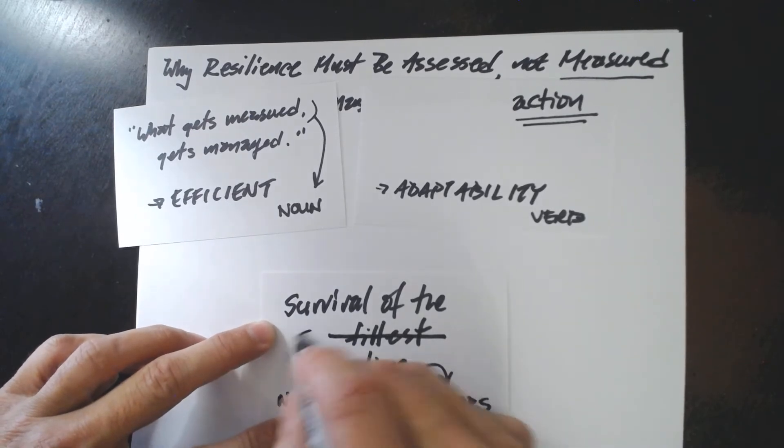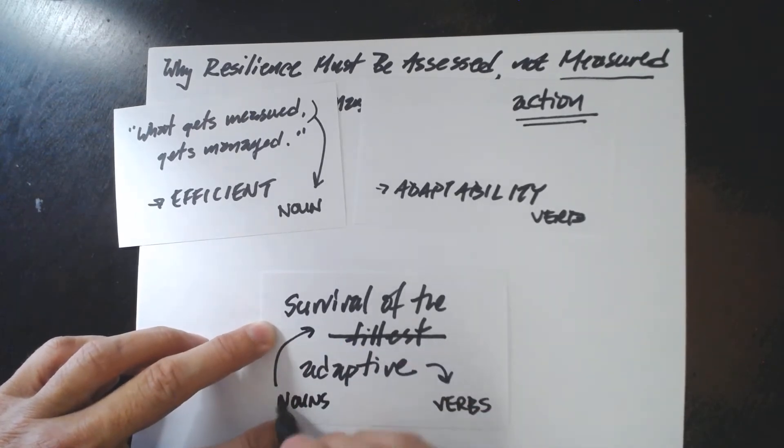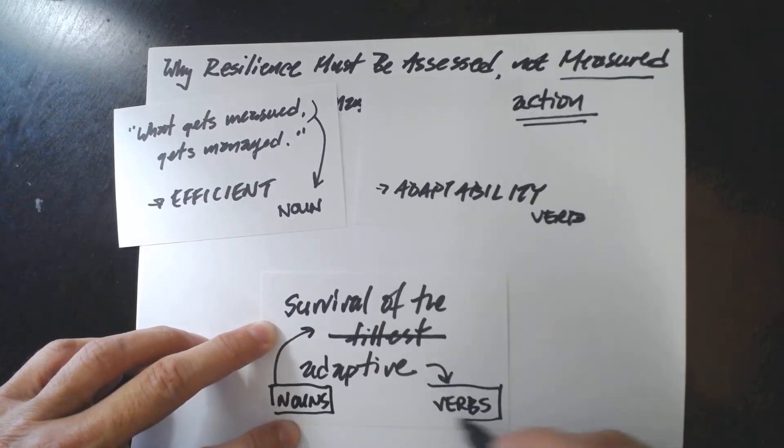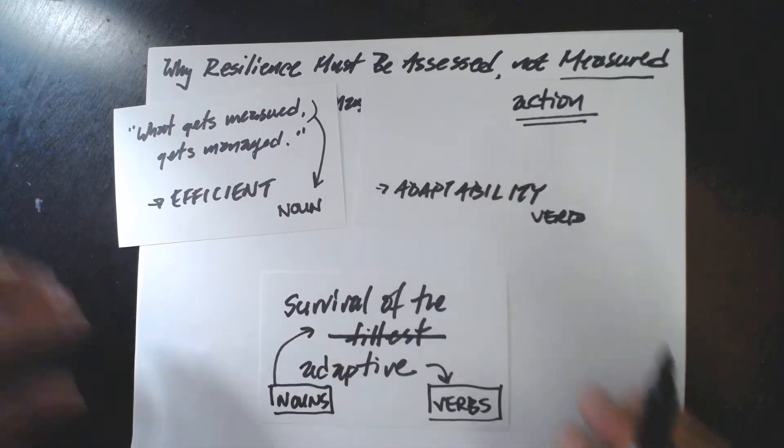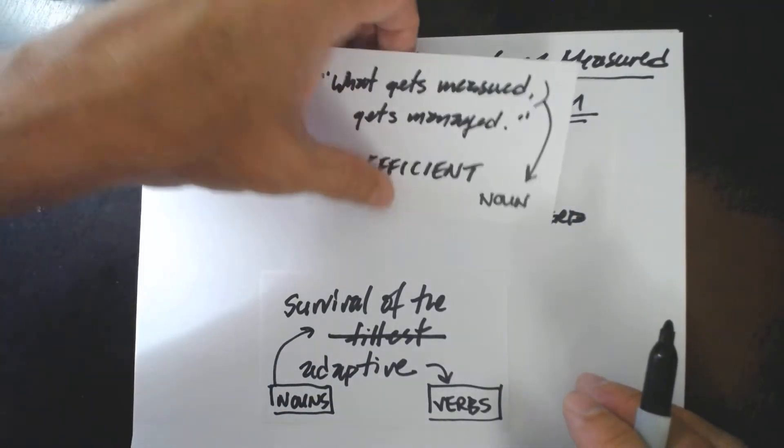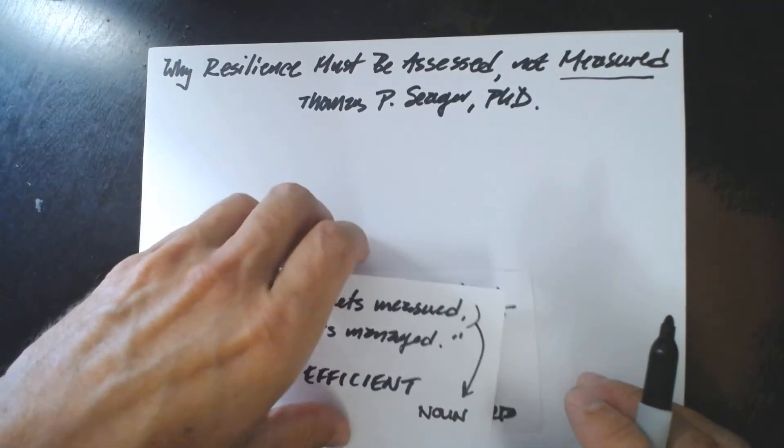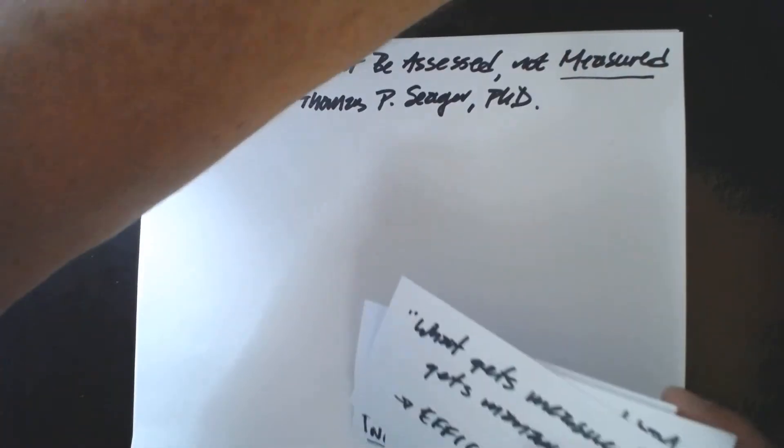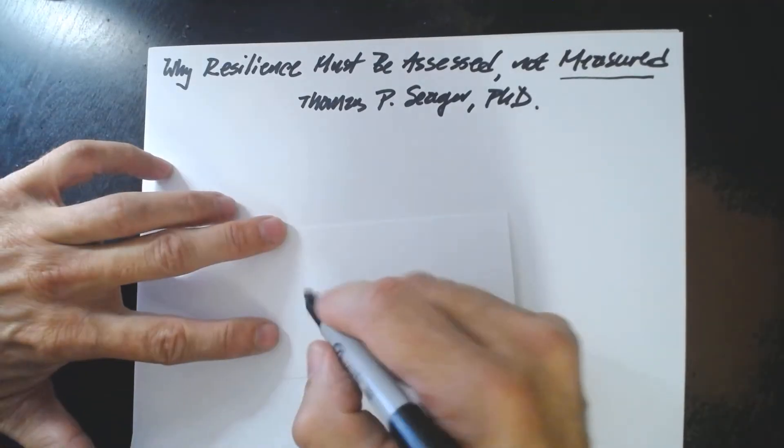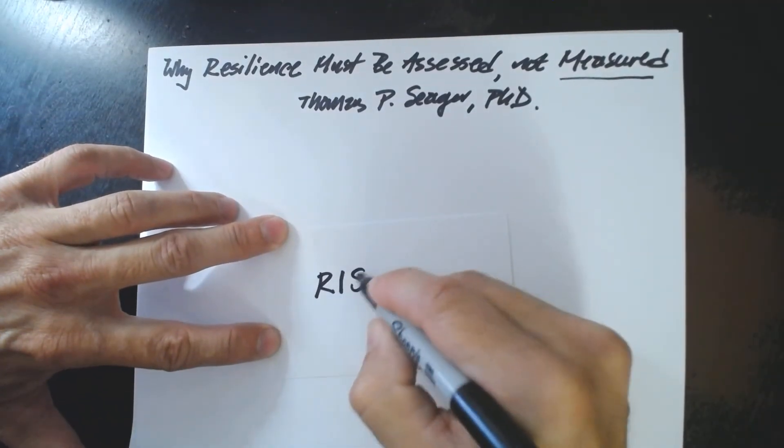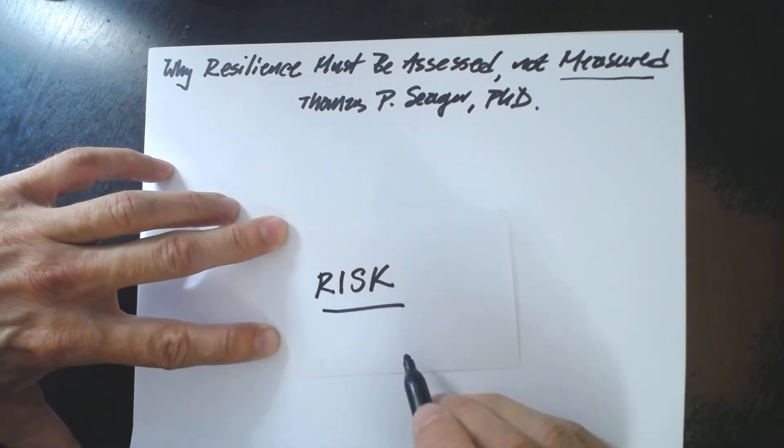Nouns over here, they might relate to the fittest. What have you got? What do you have? And verbs are related to what do you do? So we're going to go into this in a little bit more detail. And to do it, we are going to start with a familiar concept. We're going to start with something that we know better than resilience. And that something is risk.